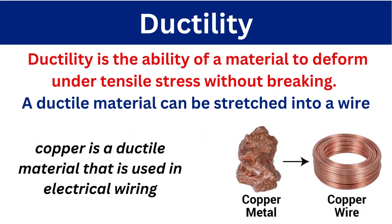Ductility is the ability of a material to deform under tensile stress without breaking. Under tensile strain it will deform but it will not break. A ductile material can be stretched into a wire. For example, copper is a ductile material that is used in electrical wire.